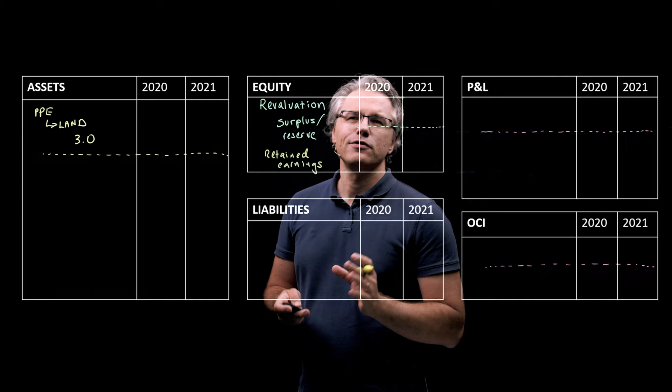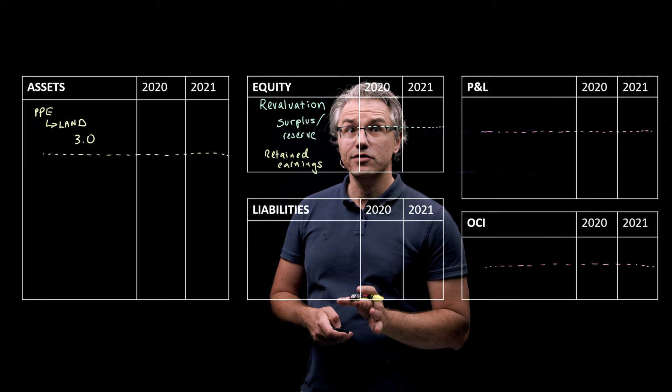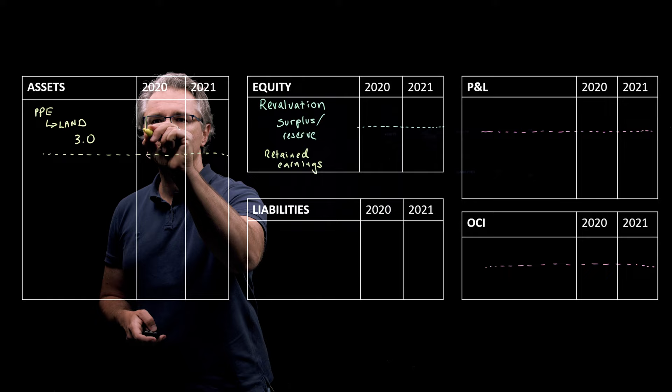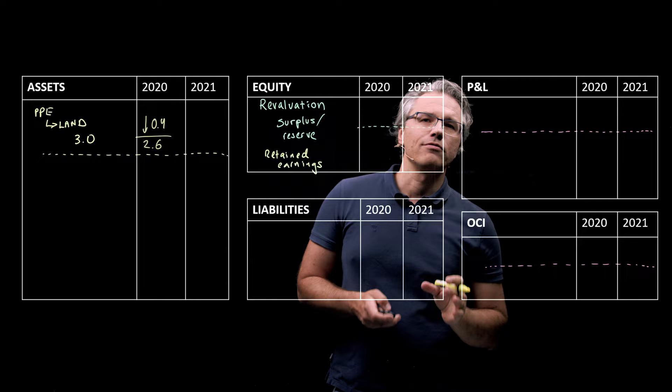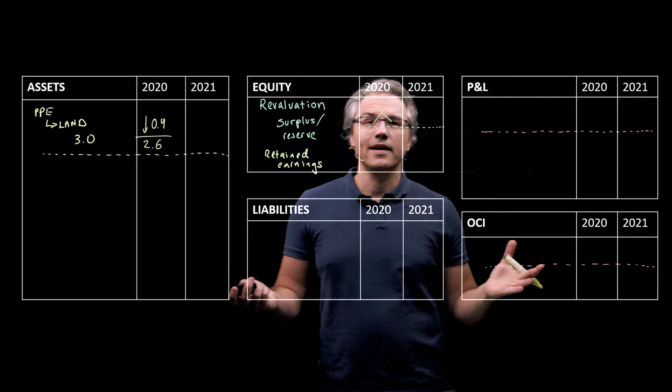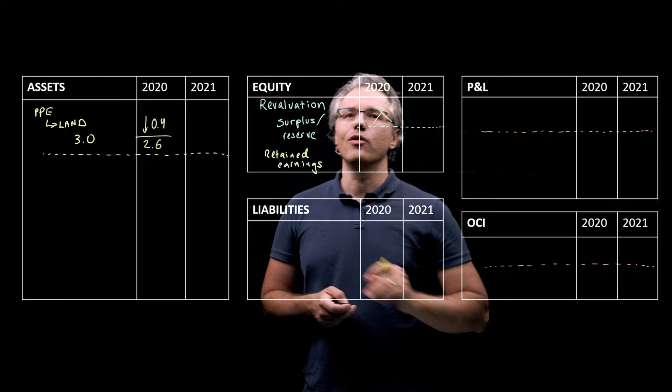Now, by the end of 2020, the plot's carrying amount needs to be reduced by €0.4 million. So, over here in this column, I'm going to have a reduction of €0.4 million all the way down to a new level of €2.6 million. And the corresponding entry cannot go to revaluation surplus. Why is that? Well, as I said in the previous video, this line can only take on positive values. So, it cannot drop below €0.